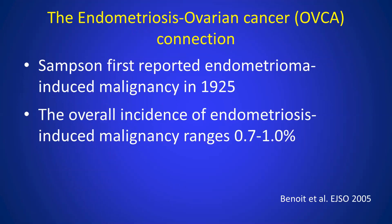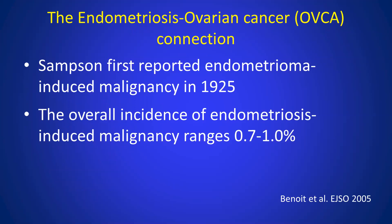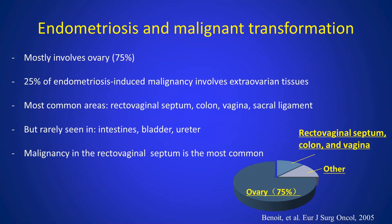It is well known there's a link between endometriosis and ovarian cancer. In fact, Sampson first reported the malignancy induced by endometrioma in 1925. But the overall incidence of endometriosis-induced malignancy is actually very low, ranging from 0.7 to 1%. And most of them actually involve ovaries. Another one quarter of them actually involves extra-ovarian tissues.